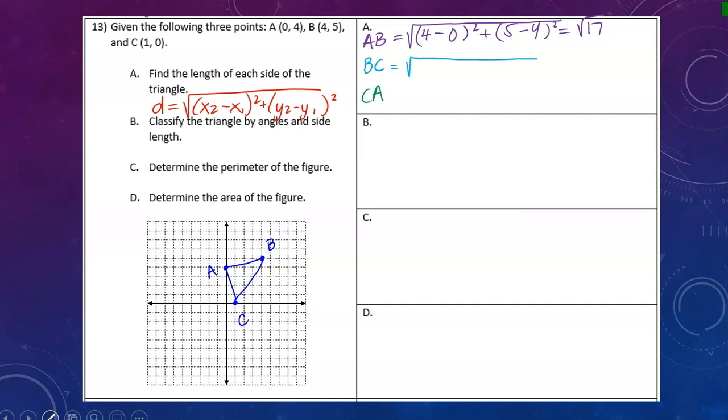For side BC, I have 1 minus 4 and 0 minus 5. This comes out to be the square root of 34. For my last side CA, I have 1 minus 0 and 0 minus 4. That comes out to be the square root of 17 also.